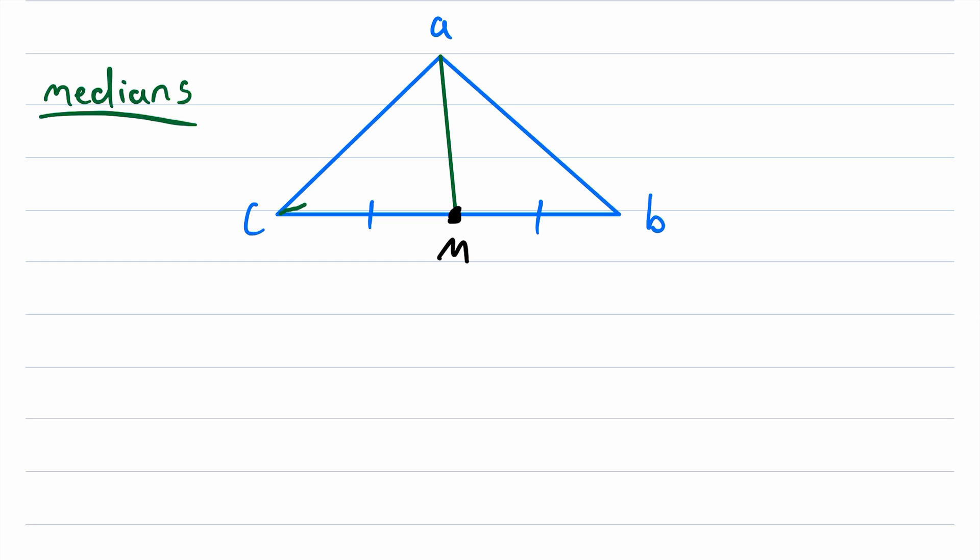So that's it. That's what a median of a triangle is. Now I'll just draw the other two medians of this triangle, and we'll mention a couple interesting facts. So again, this median here goes from the vertex C to the midpoint of the opposite side.